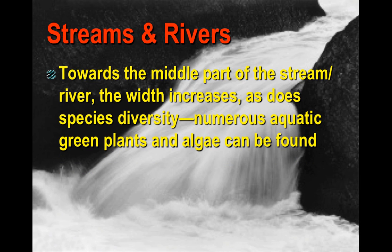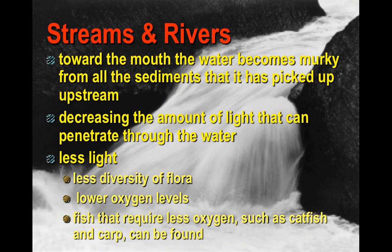As you move to the middle of the stream, diversity changes. Oxygen levels drop a little and temperatures warm up. By the mouth, there are a lot more sediments — think of the Tar River or the Neuse River, where the water is murky with limited sunlight penetrating through. Oxygen levels are low and vegetation decreases. The fish found near the mouth are bottom feeders such as catfish and carp.